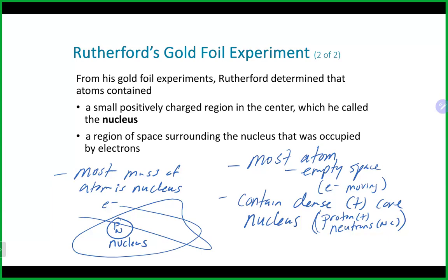There is an attraction between the electrons and the nucleus — the nucleus is positive and electrons are negative, so opposites attract. That attraction is what keeps electrons from flying away. It is also the basis for why certain electrons are involved in bonding. Electrons very close to the nucleus are called core electrons; they are held tightly because of their proximity to the positive charge. Electrons further away are called valence electrons — still held, but not as tightly, which is why they can be involved in bonding.